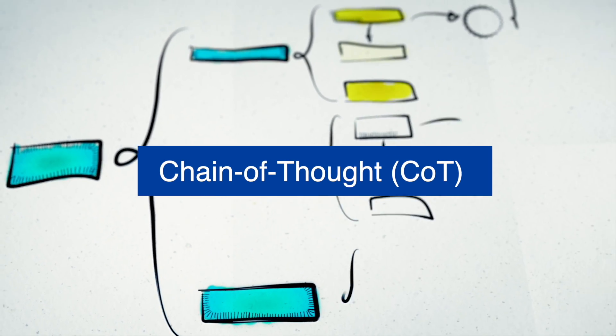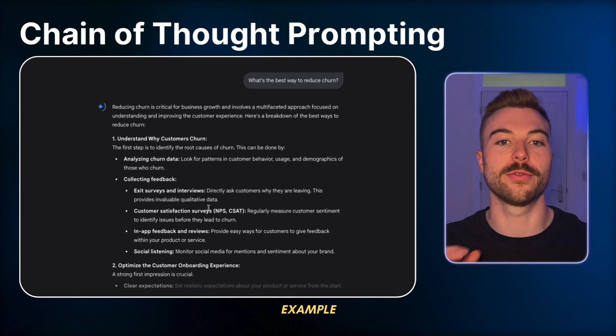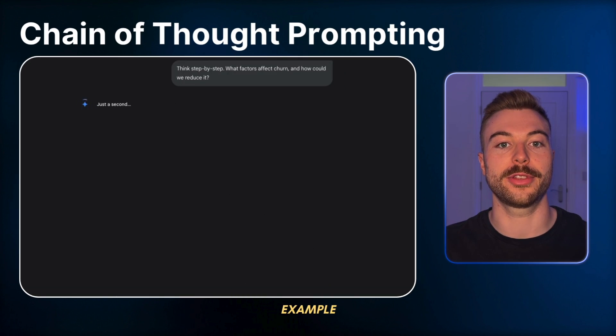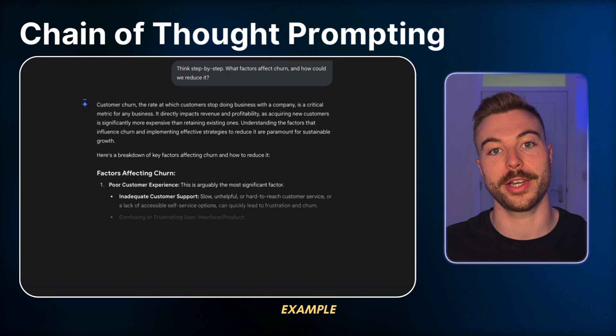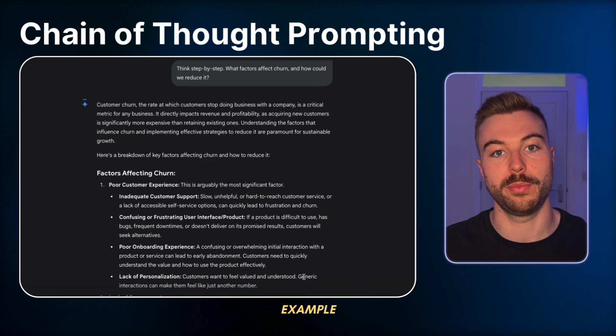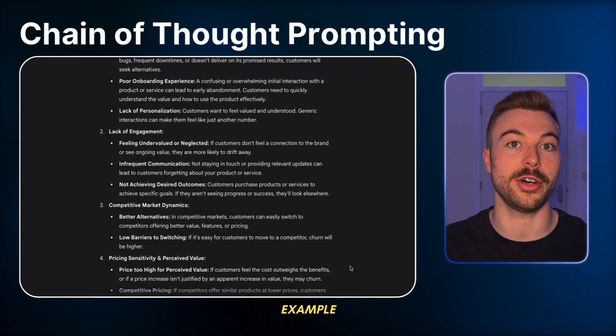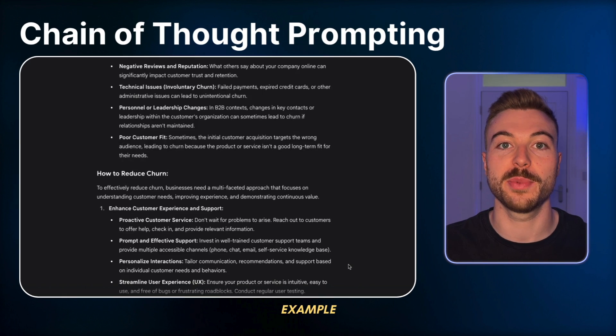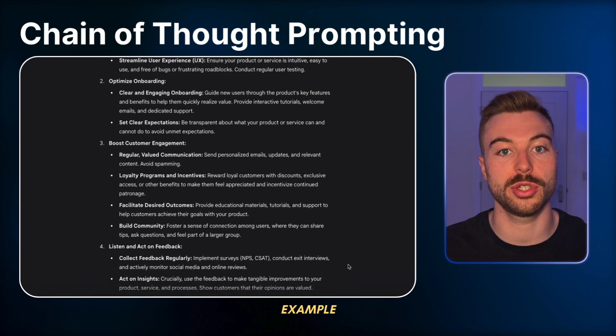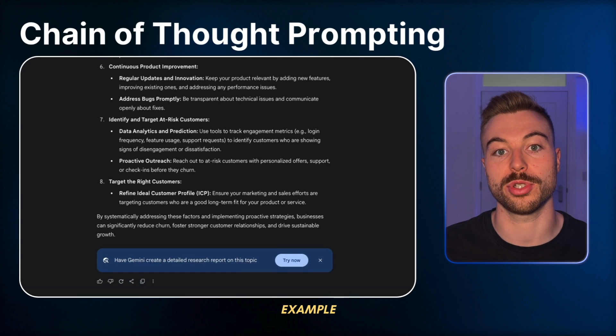Next up is chain of thought reasoning, a personal favourite. This is all about asking the AI to think out loud. Instead of 'what's the best way to reduce churn,' we say 'think step by step - what factors are affecting churn and how can we reduce it?' This is key because we're seeing the logic behind the AI's answer. This means we can spot mistakes, challenge assumptions, or ask for better follow-ups. It also helps reduce hallucinations - which are designed into AI models because of creative freedom - because the model has time to back up and double-check what it's saying. We can also ask the AI to reassess its response and see if it can give a better output.